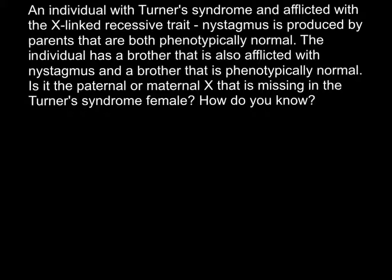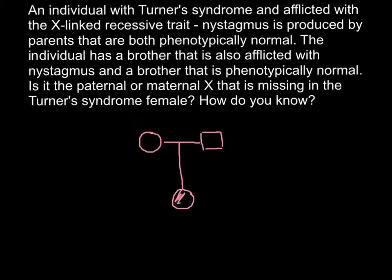Let me start to explain how to solve this problem by drawing a pedigree. We are told that this female has two parents that are phenotypically normal — here is her mother connected with her father, and both parents are phenotypically normal. Here is the affected female, who also has Turner syndrome, meaning she has only one X chromosome, abbreviated as XO or notated as 45,X.